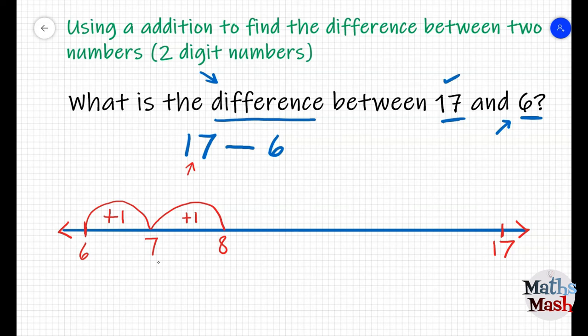Then we have another hop of one and I write plus one and I've landed on eight. And I've done another hop and I write plus one and I land on the number nine. Now, I'm just going to carry on like this until I get to 17 and you can do the same.